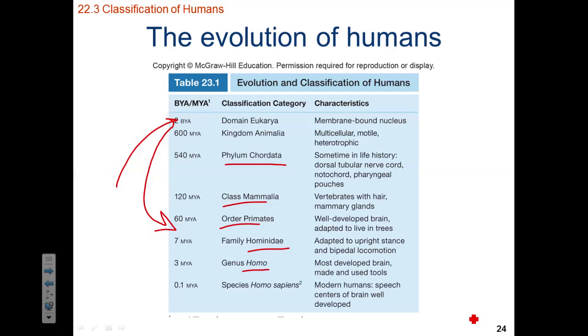Approximately 100,000 years ago, the species Homo sapiens — we, as humans — appear within the fossil record.